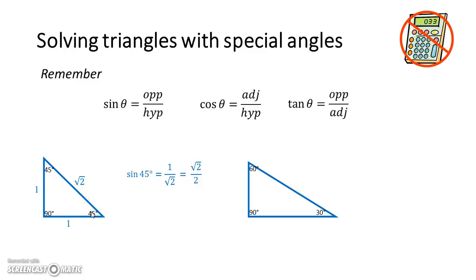Cos 45 is adjacent over hypotenuse. So again, one over root two. And tan 45 is opposite over adjacent, one over one, cos one.